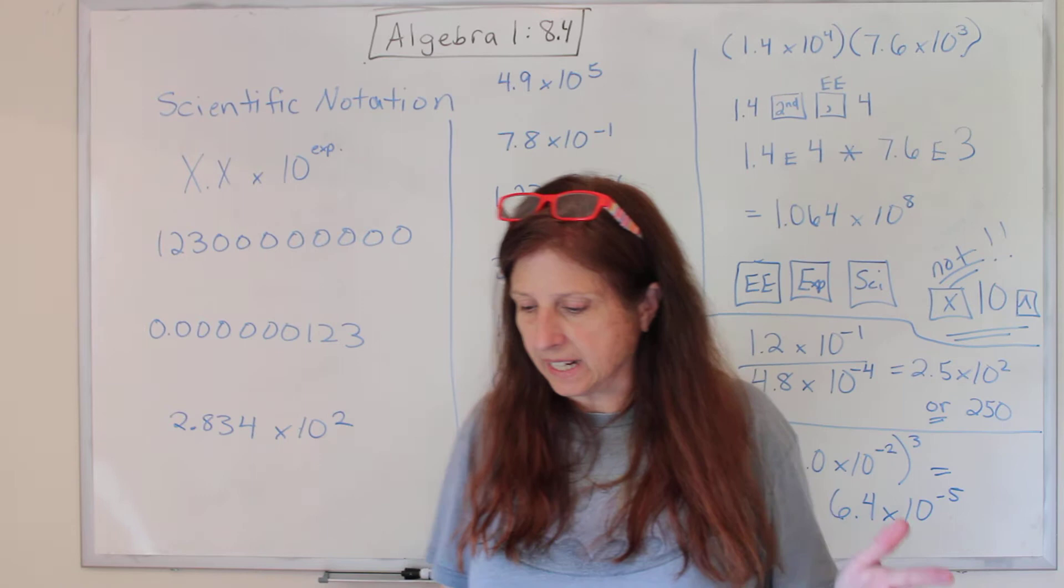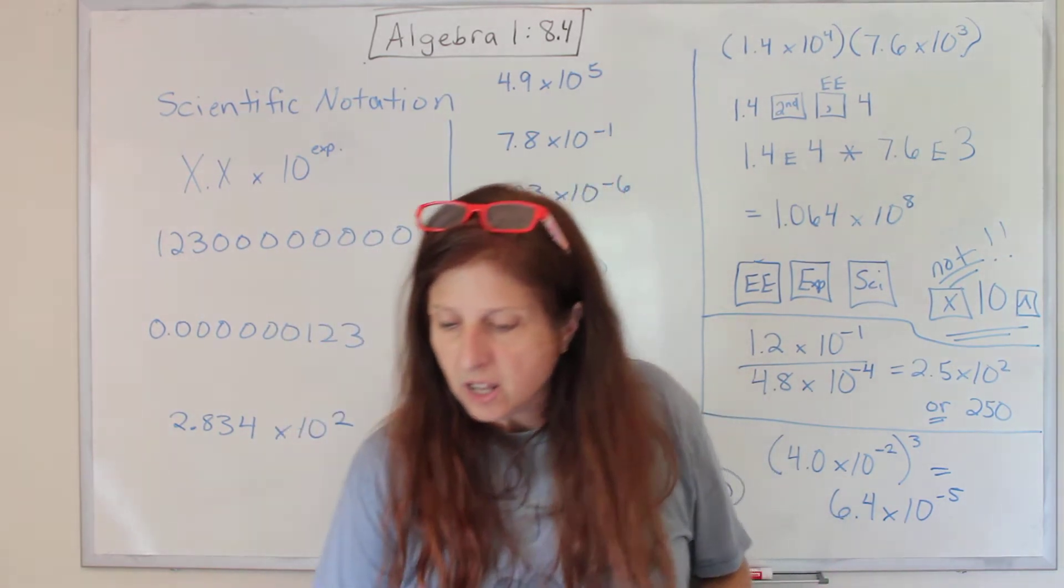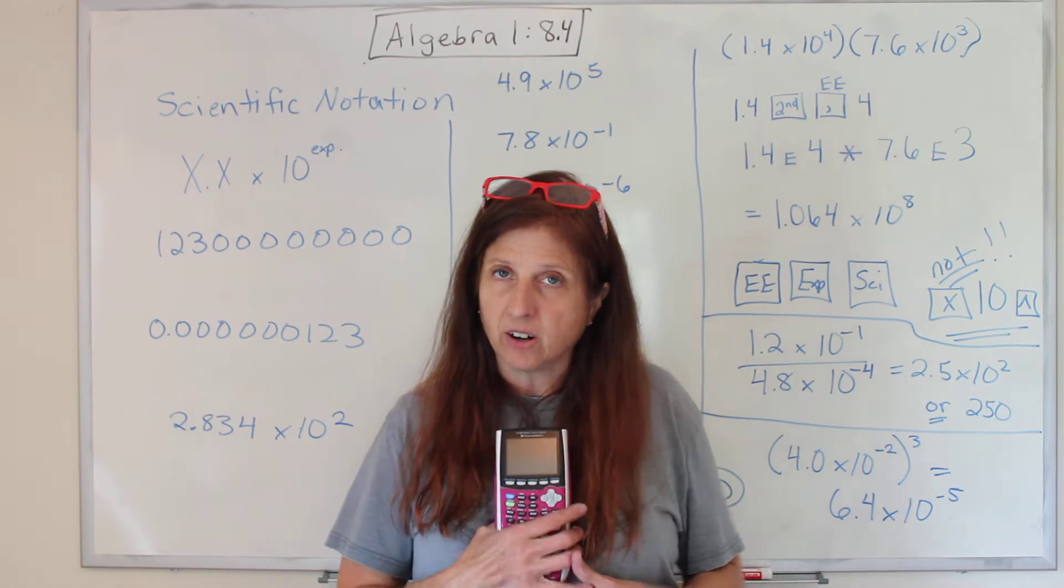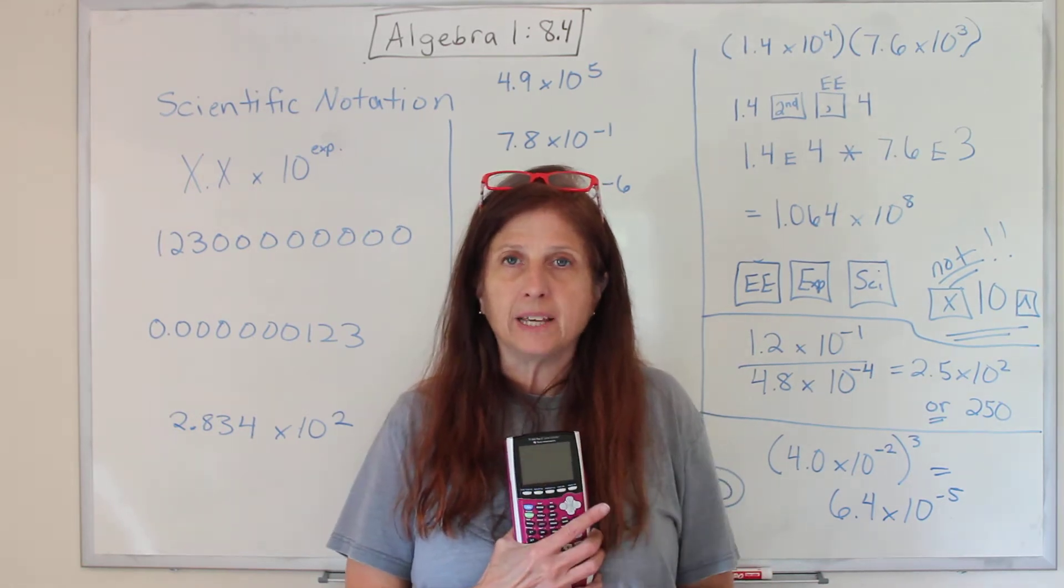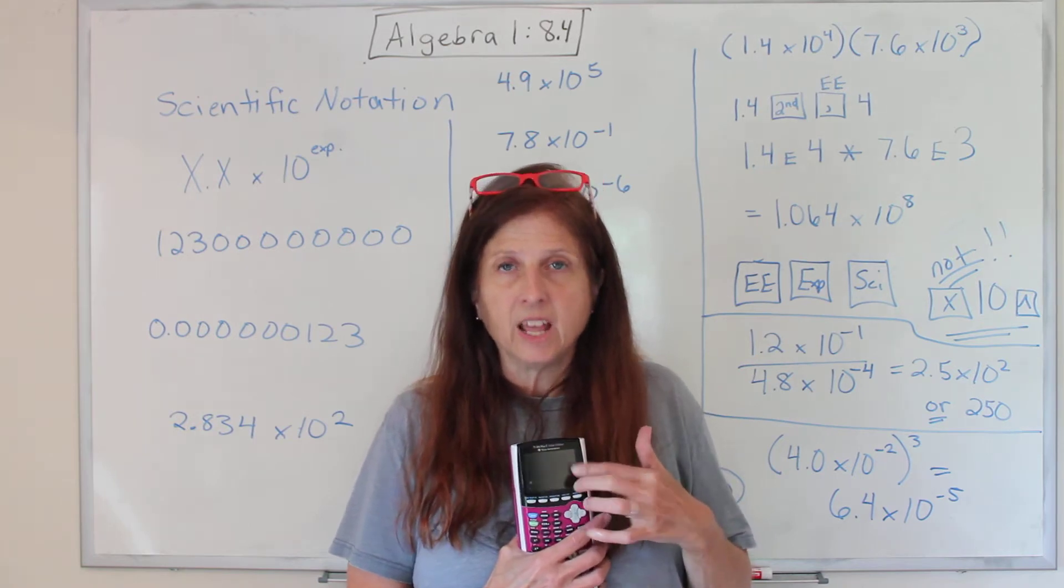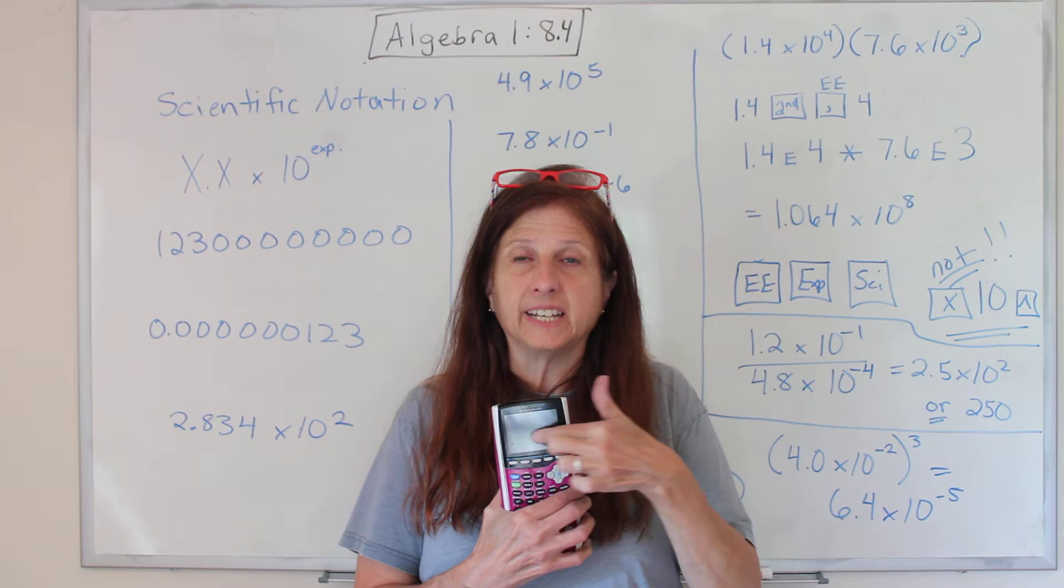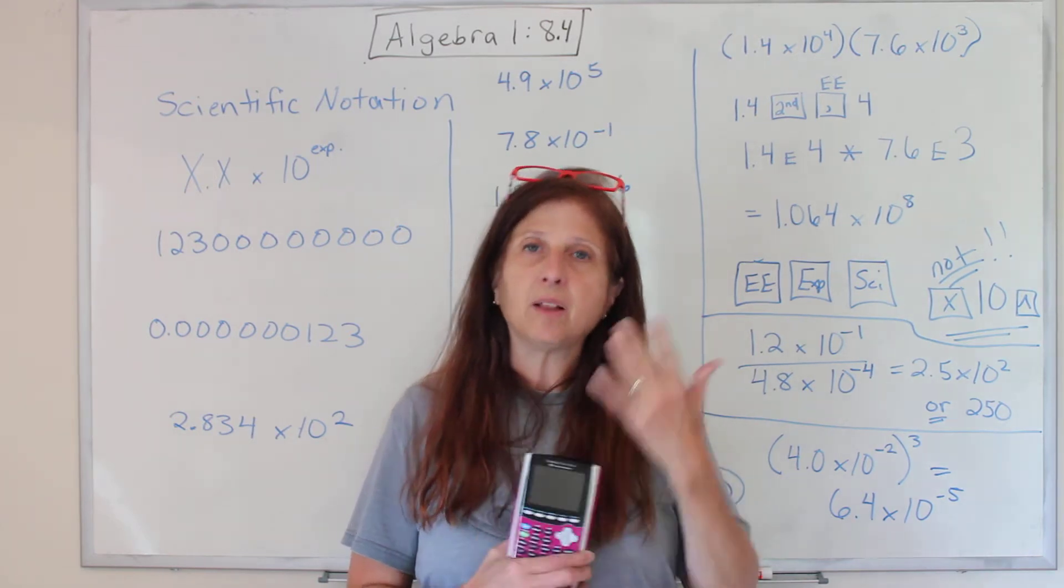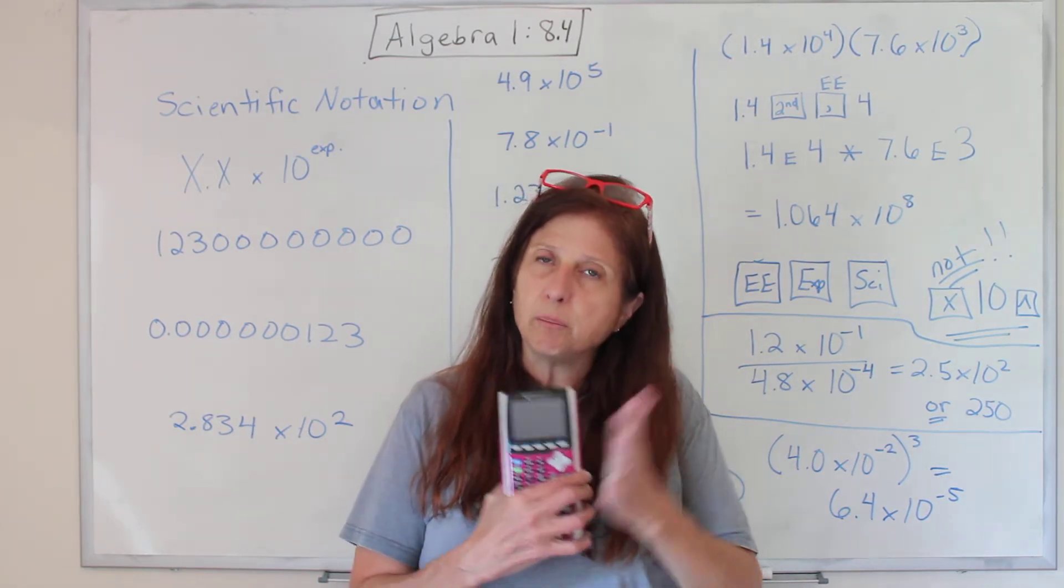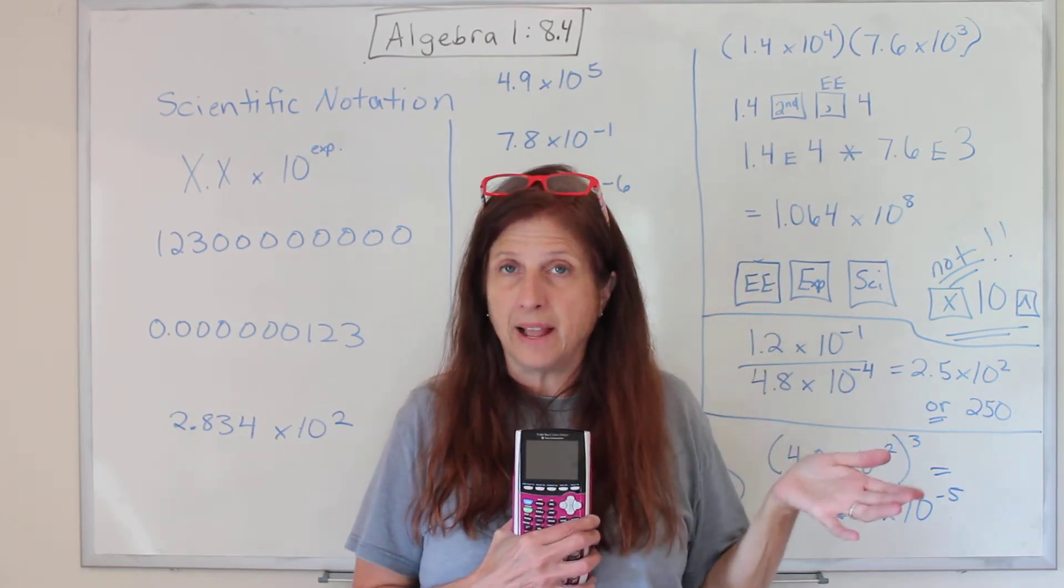Now, what is scientific notation? Well, it is a shorthand to tell your calculator numbers too big and too small for the display screen. Your calculator can do math on bigger numbers than it can display. So we've developed this sort of shorthand to communicate with our calculators to make it do bigger and smaller math.